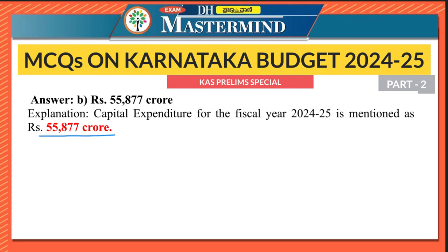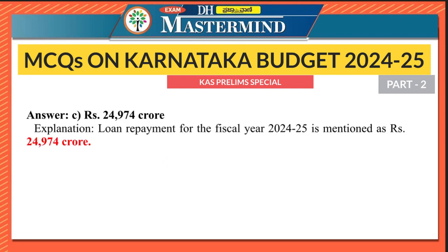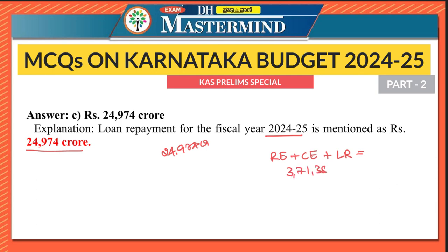Now we know capital expenditure and revenue expenditure amounts. According to Karnataka State Budget 2024-25, what is the amount allocated for loan repayment? The right option is option C — 24,974 crore. If you add revenue expenditure plus capital expenditure plus loan repayment, you get the total expenditure of 3,71,383 crore, which is also the size of the total budget.